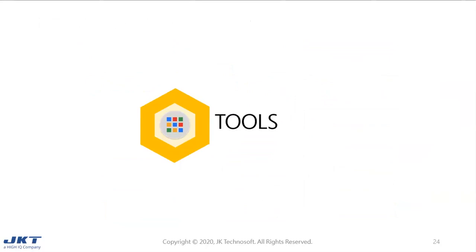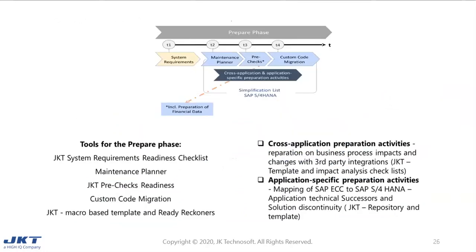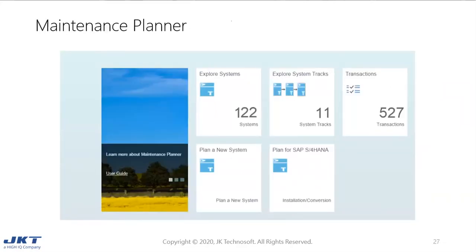Let's move on to the final subject: tools used for system conversion. For the prepare phase, JKT has pioneered an innovative way to track the readiness checklist — called the JKT System Readiness Checklist — which has all SAP recommended notes along with description, status, and manual activities. JKT has also developed a template and impact analysis checklist across application-specific preparatory activities. The maintenance planner tool, provided by SAP, is used to plan for S4HANA conversion or new implementation, and also helps in downloading all required media for S4HANA software.